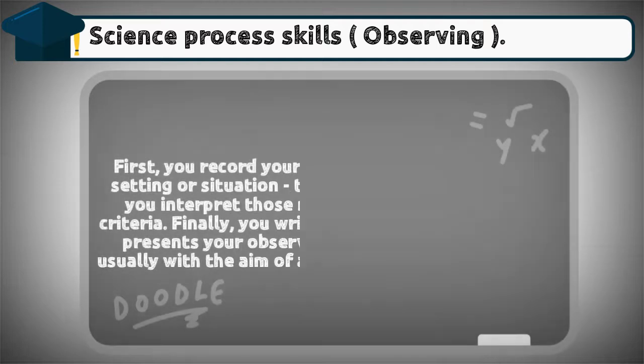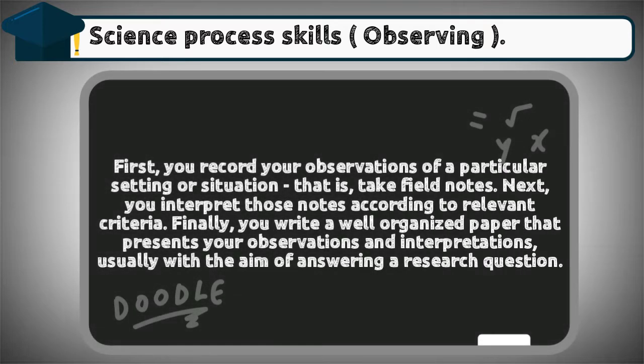How should we write observations? First, you record your observations of a particular setting or situation — that is, take field notes. Next, you interpret those notes according to relevant criteria. Finally, you write a well-organized paper that presents your observations and interpretations, usually with the aim of answering a research question.